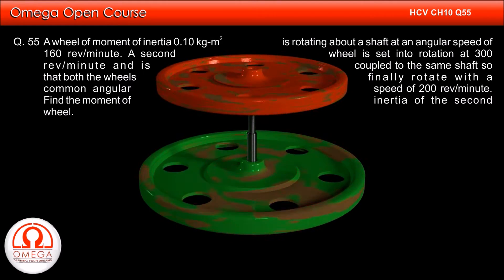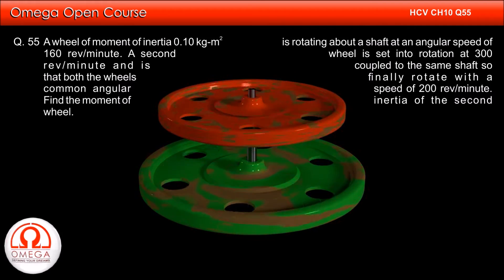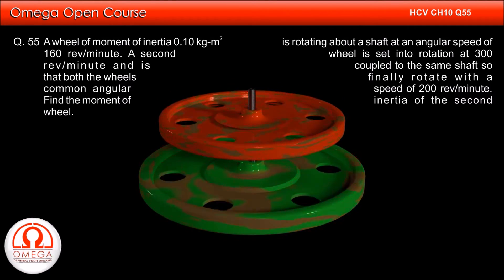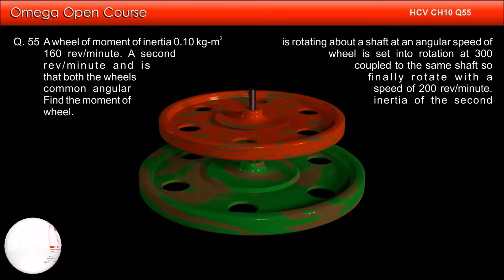A second wheel is set into rotation at 300 rpm and is coupled to the same shaft so that both the wheels finally rotate with a common angular speed of 200 rpm. Find the moment of inertia of the second wheel.